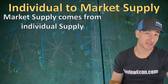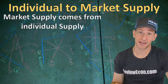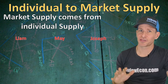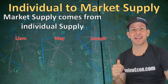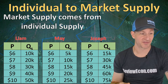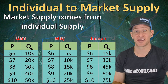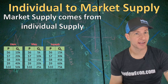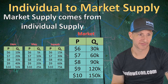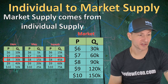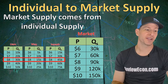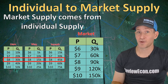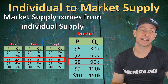Just like with demand curves, a market supply curve comes from individual suppliers' supply curves. Let's say we have three farmers — Liam, May, and Joseph — who grow bushels of wheat. We have tables showing the supply schedule for each, and as the price of wheat increases, each of them produces more bushels. Adding up those three individual supply curves gives us the market supply curve. At $8 a bushel, Liam produces 30,000 bushels, May produces 15,000, Joseph 45,000 — so the market quantity supplied at $8 is 90,000 bushels of wheat.